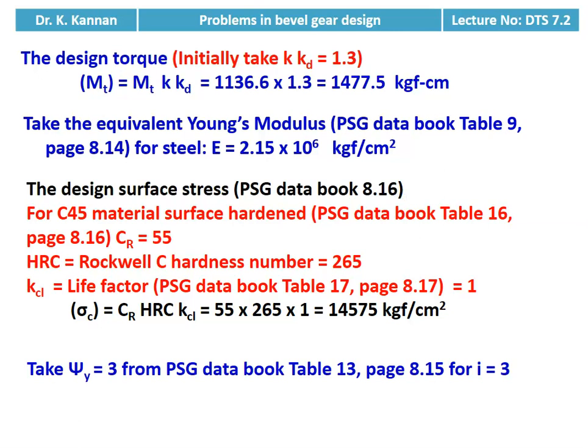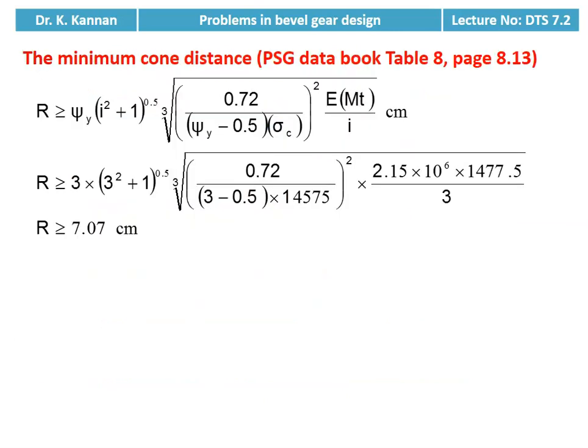We take ψY = 3 from PSG data book, table number 13 for i = 3. Then we calculate the minimum cone distance. The equation is available on page number 8.13, table 8: R ≥ ψY × √(i² + 1) × ∛[0.72 / (ψY − 0.5) × σC² × E × MT(design) / i]. Substituting numerical values, cone distance R ≥ 7.07 centimeter.